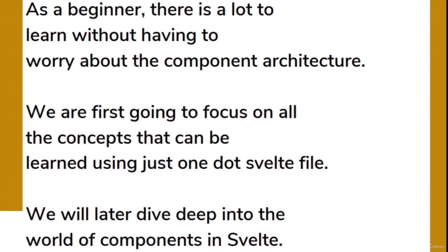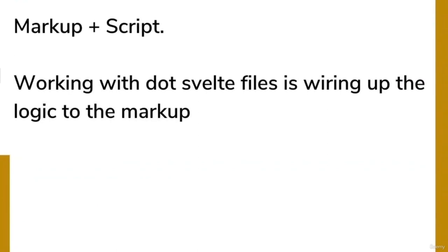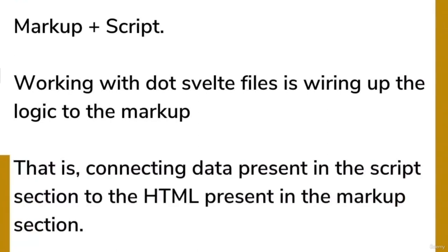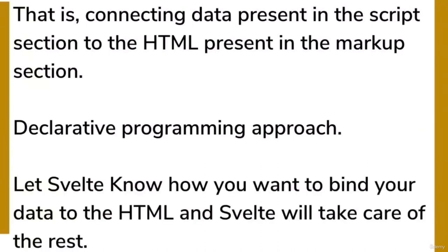A major portion of working with a .svelte file is wiring up the data and logic to the markup — that is connecting the data in the script section to the HTML in the markup section. This is the declarative programming approach mentioned in the very first video. All you have to do is let Svelte know how you want to bind your data to the HTML, and Svelte will take care of the rest. So let's finally get started with some code in the next video.